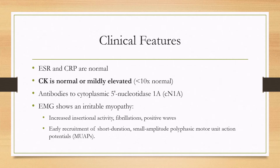When labs are drawn, the ESR and CRP are normal. CK can either be normal or only mildly elevated, less than 10 times normal — it should not be greater than 15 times normal. Antibodies are not always drawn, but antibodies can sometimes occur in this disease, specifically to cytoplasmic 5-nucleotidase 1A. Note that this antibody also occurs in other autoimmune diseases, so it is not specific.